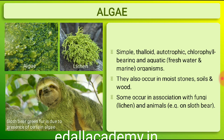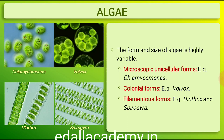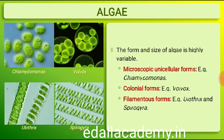Some of them also occur in association with fungi, lichen and animals — for example, on sloth fur. The form and size of algae is highly variable. The size ranges from microscopic unicellular forms like Chlamydomonas, to colonial forms like Volvox and to the filamentous forms like Ulothrix and Spirogyra. A few marine forms such as kelps form massive plant bodies.